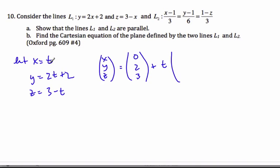Plus t, I get 1, 2, and negative 1. Here's my direction vector.